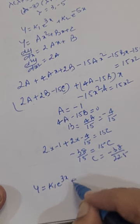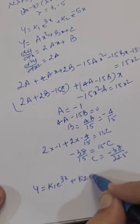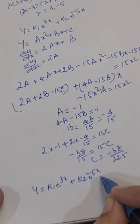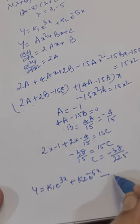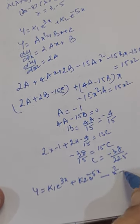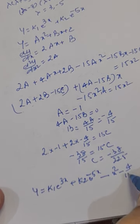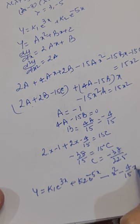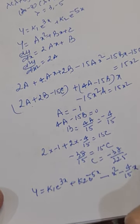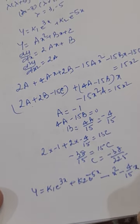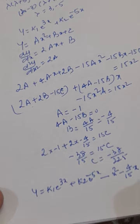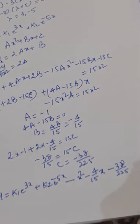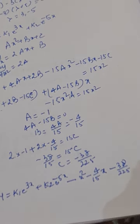So the complete solution of this given differential equation is: y = k₁e^(3x) + k₂e^(−5x) − x² − (4/15)x − 38/225. This is the complete solution of the given differential equation.